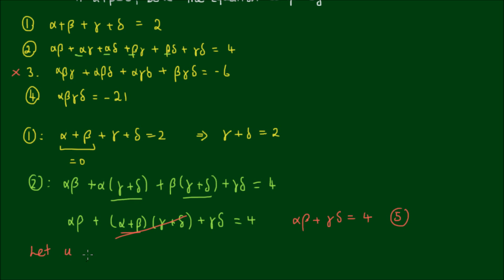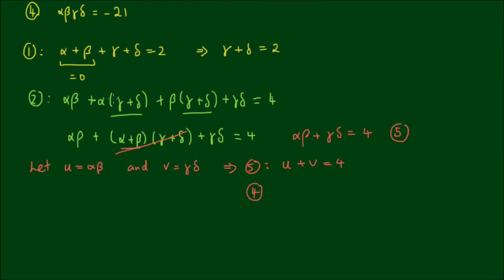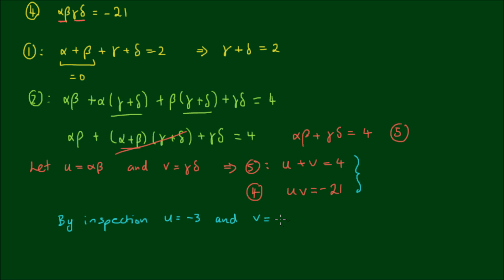Let u equal alpha·beta and v equal gamma·delta to simplify things. Equation 5 becomes u plus v equals 4, and equation 4 gives u times v equals negative 21. Solving simultaneously: the factors of negative 21 that sum to 4 are negative 3 and 7. So by inspection, u equals negative 3 and v equals 7.